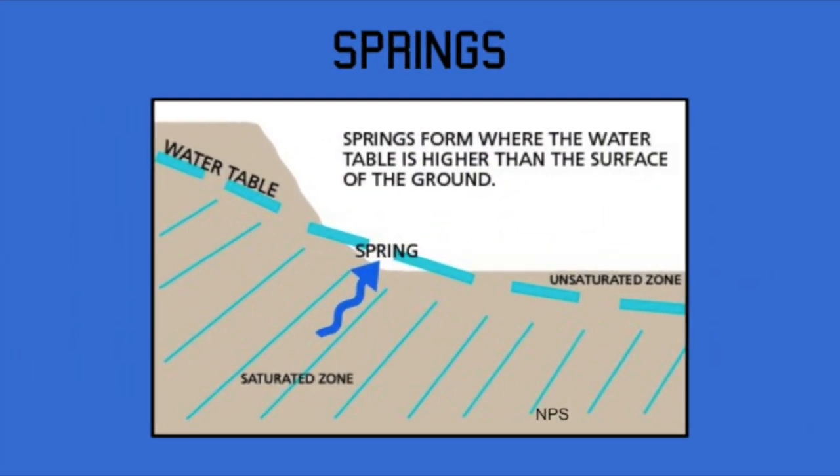Springs can also be a source of water for a river or stream. When water from springs reaches the surface, it can start to flow in a channel.